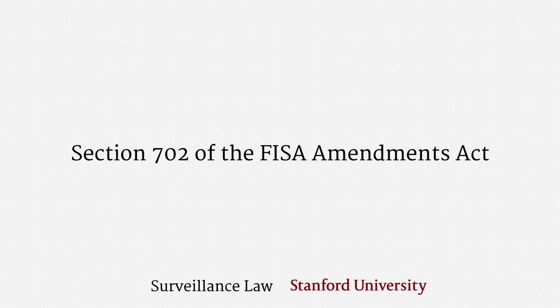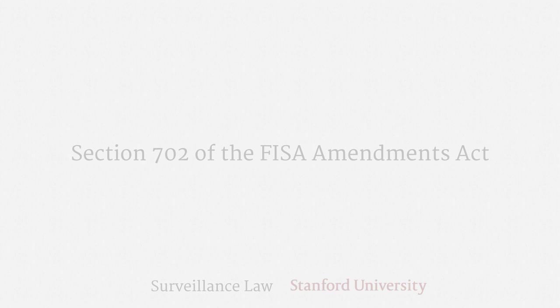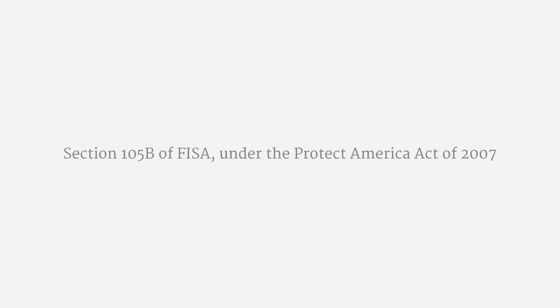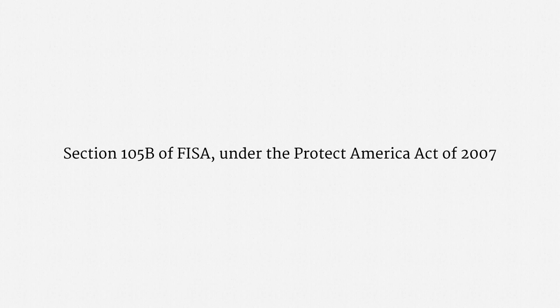Welcome back. This lecture provides a quick overview of Section 702 of the FISA Amendments Act. By way of background, the key provisions I'm going to discuss were first enacted as Section 105 of FISA under the Protect America Act of 2007. Those provisions lapsed in 2008, then were reenacted under the FISA Amendments Act. If you see a reference to Section 105, that's just the predecessor version.